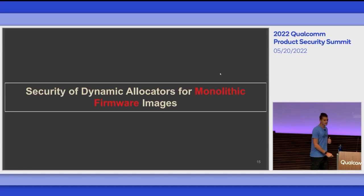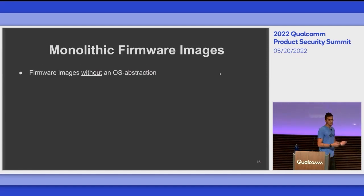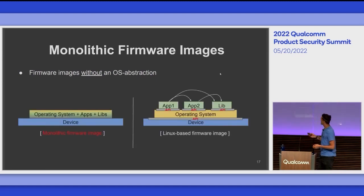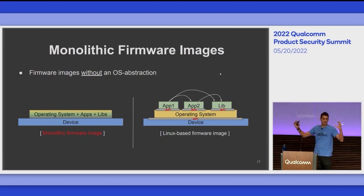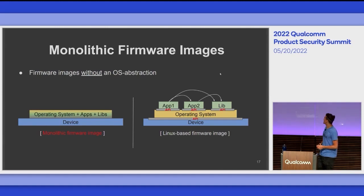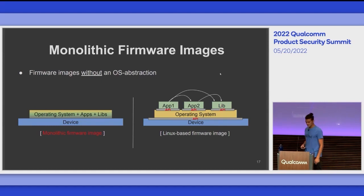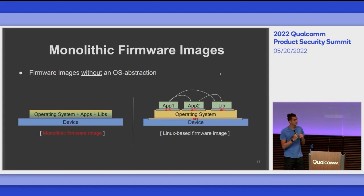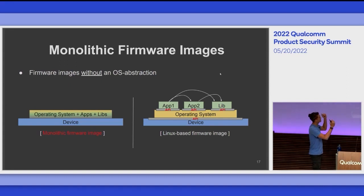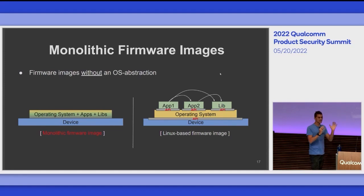A monolithic firmware image is a firmware image without an OS abstraction. On the left you can see a monolithic firmware image — a big binary blob that contains everything: the operating system, the libraries, and the application performing the device's functionality. On the right is a classic system with a clear separation between all layers — apps talking with the OS through specific APIs, and then specific APIs to talk with the hardware. Everything is clean and nice, which is not the case for monolithic firmware images.